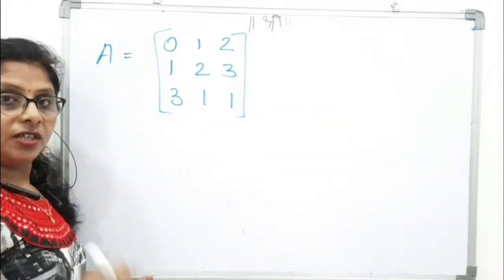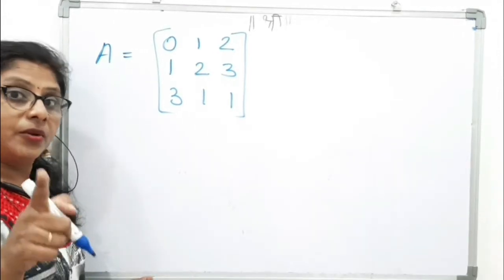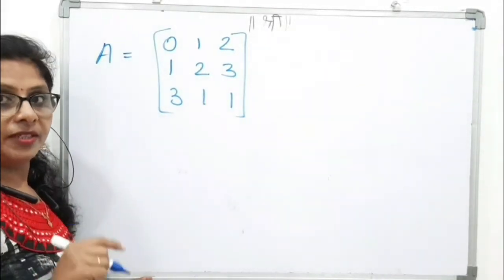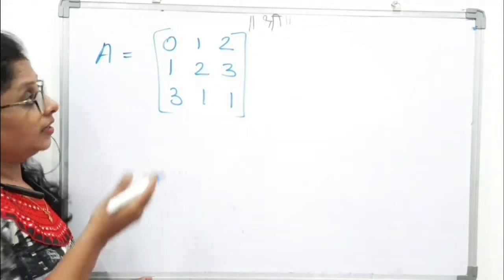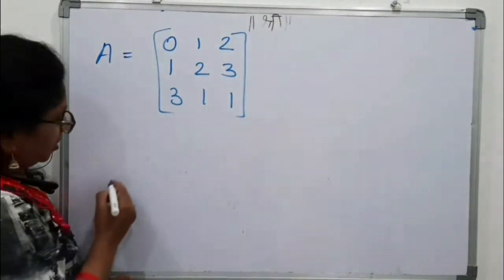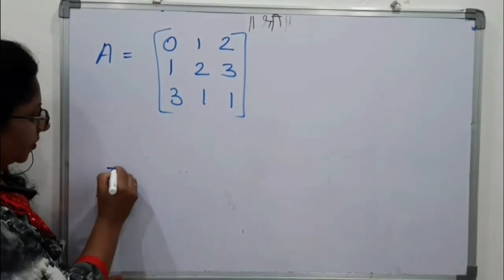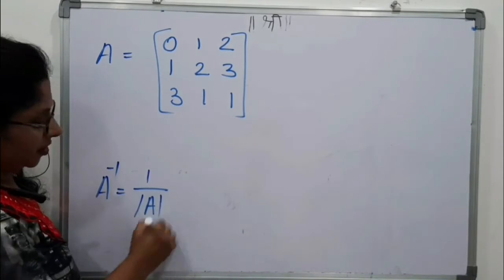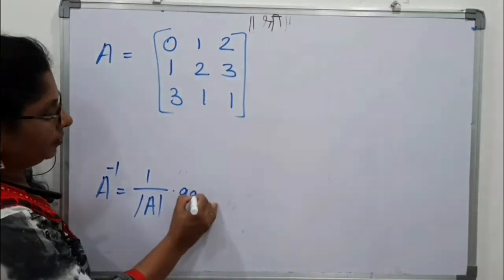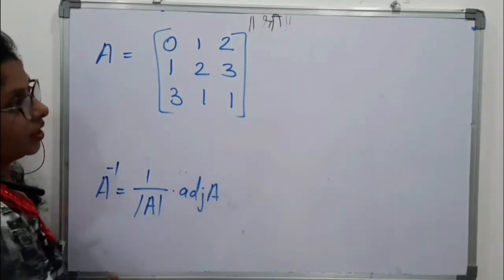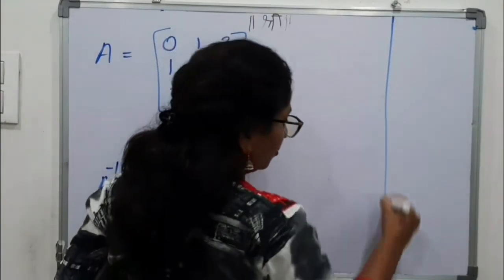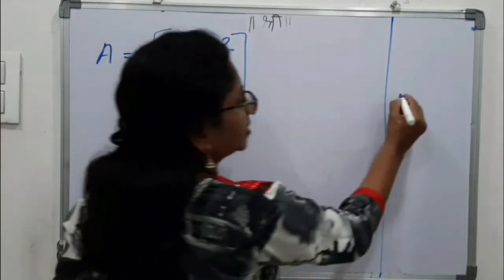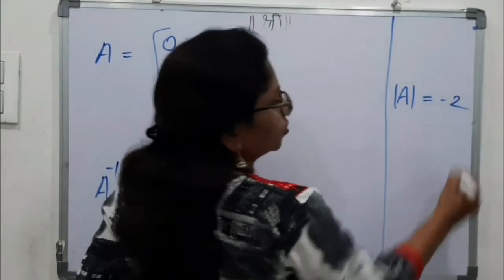Because finding the inverse by elementary transformations that topic is not omitted by the board. So using elementary transformations you have to find the inverse of any matrix. And second method was adjoin method. And now this is shortcut method. So, what is the definition of inverse? A inverse is 1 upon determinant of A into adjoin of A. Now we know how to find the determinant of any matrix. If you find the determinant of this matrix, it will be minus 2.